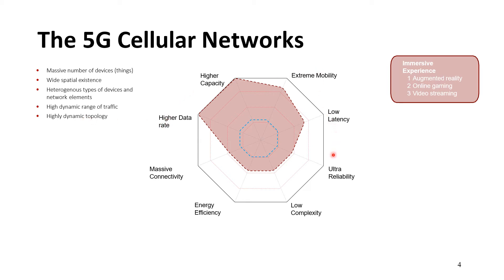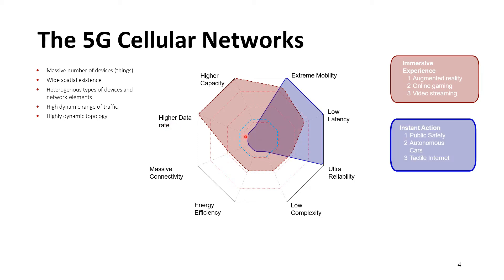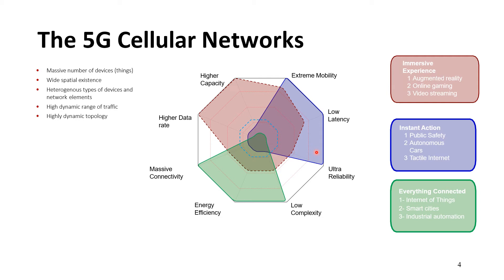Looking at the octagonal shape, the features of 5G include extreme mobility, low latency, ultra reliability, low complexity, energy efficiency, massive connectivity, high data rate, and higher capacity. Different applications lean toward different requirements. Immersive experiences like augmented reality, online gaming, and video streaming require high capacity and high data rate. The inner block can be thought of as 4G. Instant-reaction applications like public safety, autonomous cars, and tactile internet require low latency, ultra reliability, and extreme mobility. For Internet of Things, smart cities, and industrial automation, massive connectivity, energy efficiency, and low complexity are key.